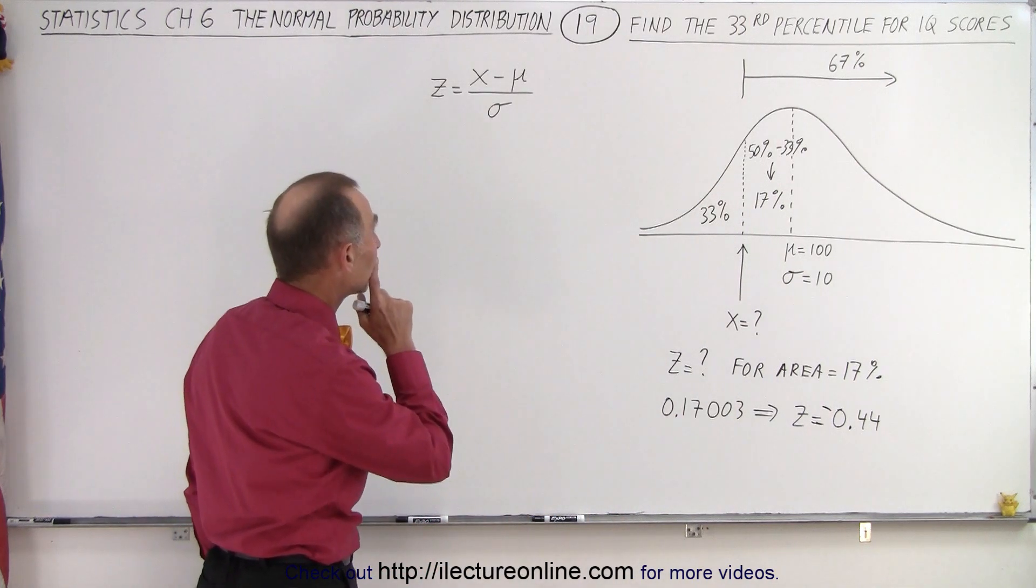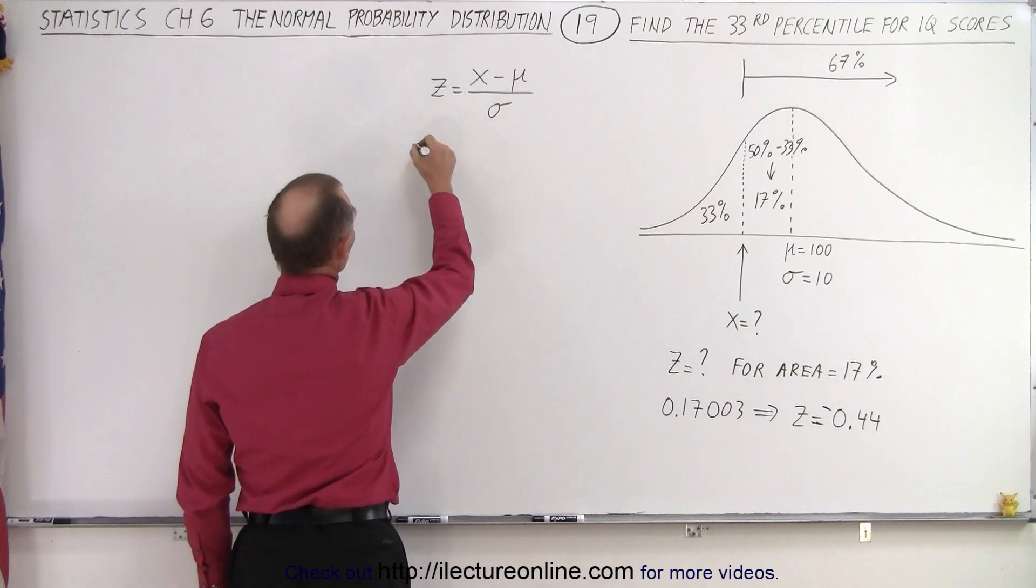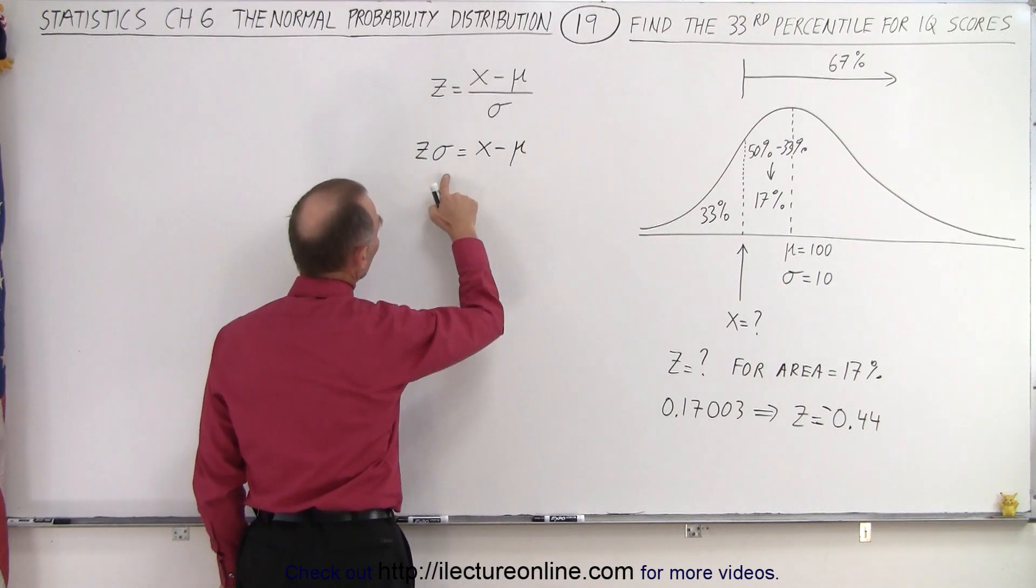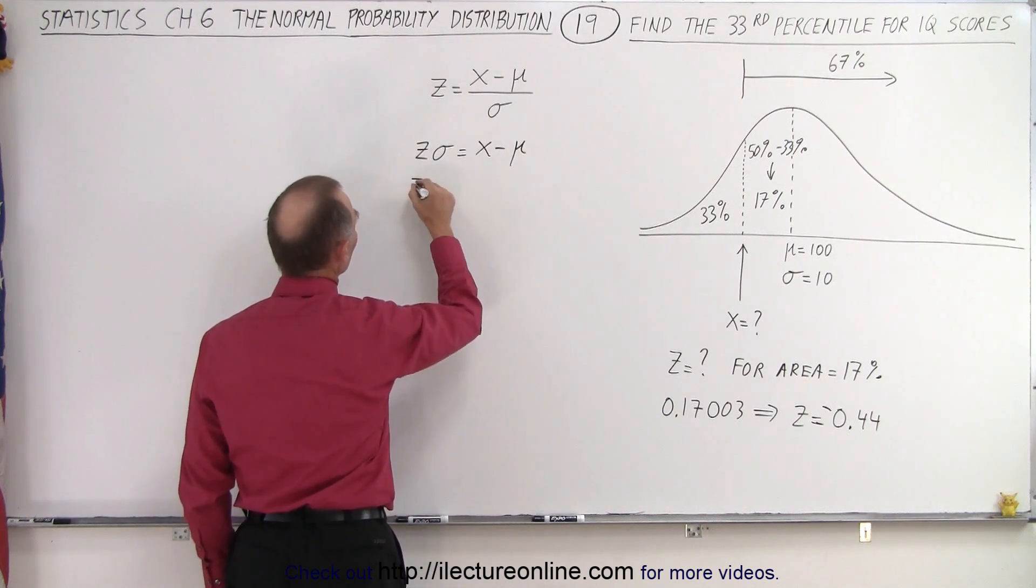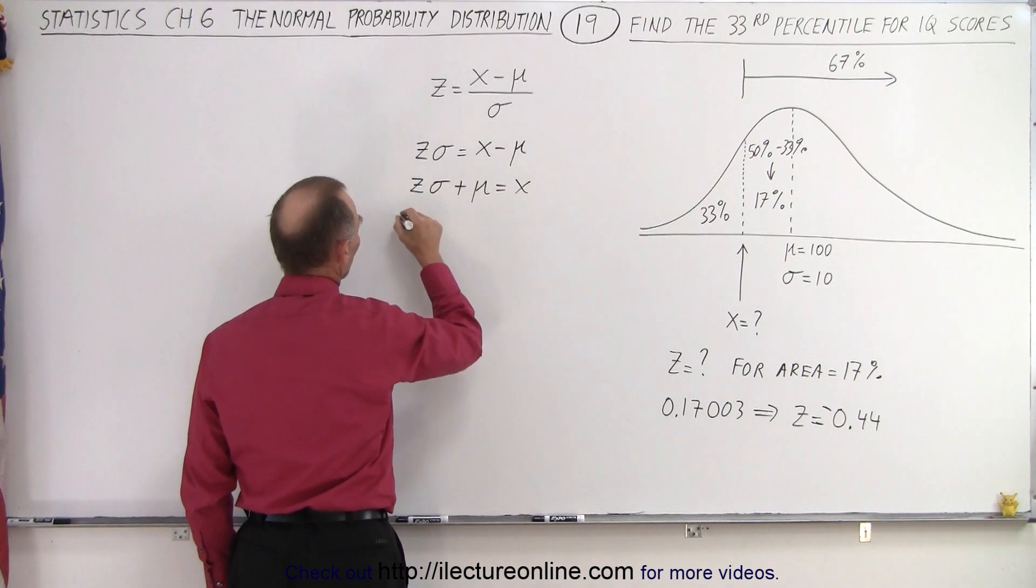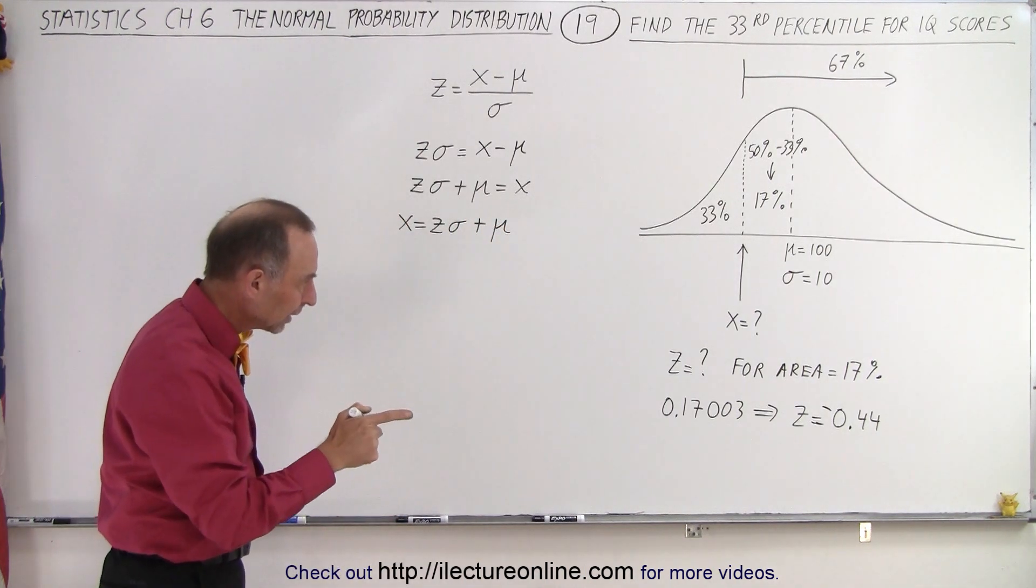So now, we're going to find the X value, so we need to solve this equation for X. Z times sigma equals X minus the mean, and then moving the mean across, we have Z times sigma plus the mean equals X, or X equals Z times sigma plus the mean.